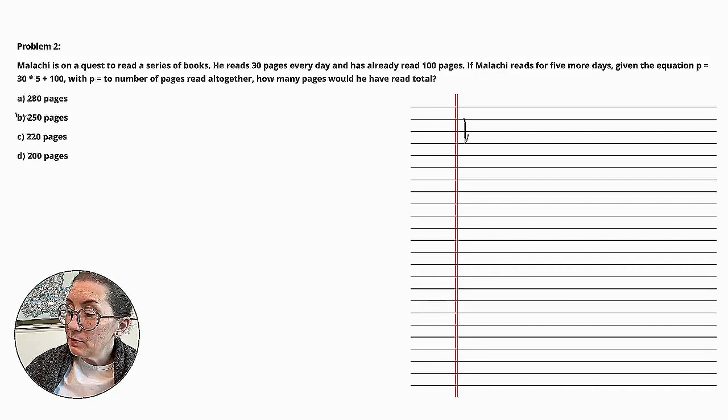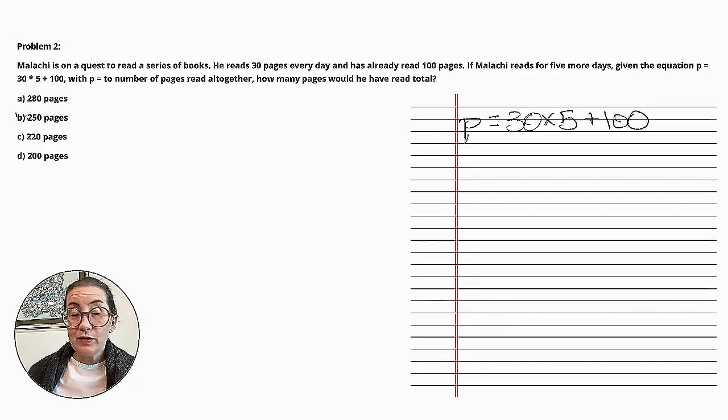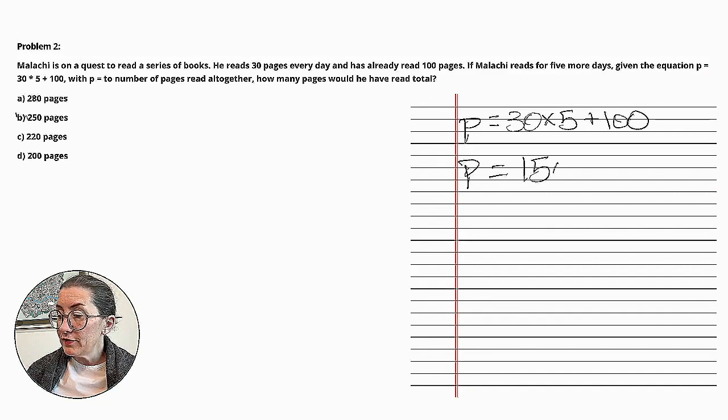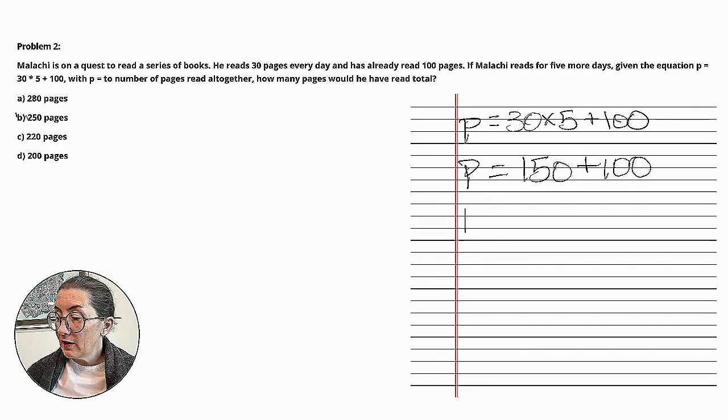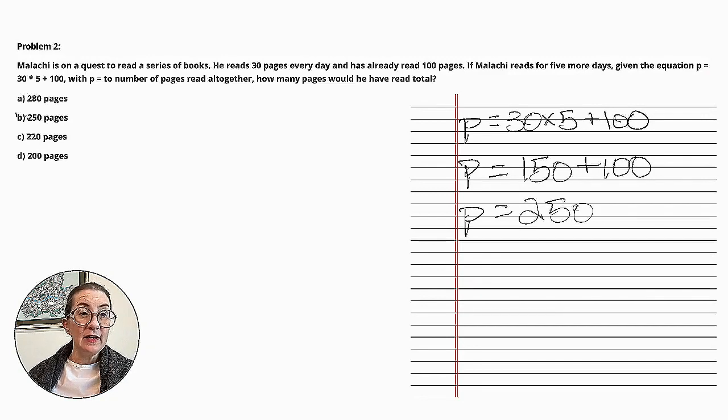The equation we've been given is P is equal to 30 times 5 plus 100. We do the multiplications first. P is equal to 150 plus 100. P is equal to 250. So the number of pages that Malachi would have read in total at the end of the 5 days is 250.